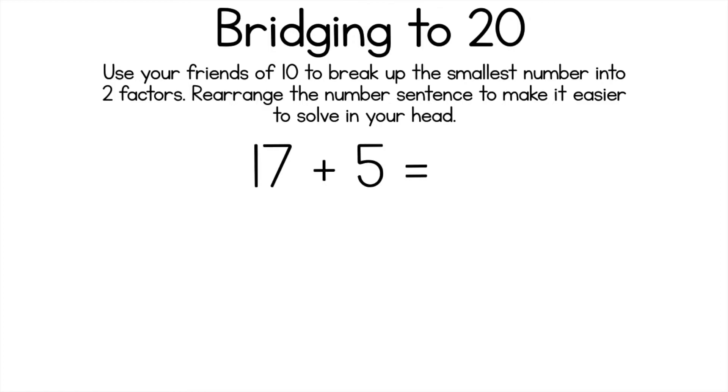So if I had the question 17 plus 5. Now some of you might use the counting on strategy to solve this but I'm going to show you how to do it in a different way. Now if you look at the biggest number 17 you need to figure out what is the friend of 20 of 17? 3. Okay so I know that 17 plus 3 is 20 but I don't have 3, I have 5. So I'm going to break 5 into 3 and 2 because 3 plus 2 is 5.